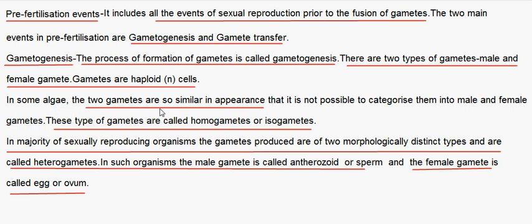In some algae, the two gametes are so similar in appearance that it is not possible to categorize them into male and female gametes. This type of gamete is called homogametes or isogametes. In the majority of sexually reproducing organisms, the gametes produced are of two morphologically distinct types and are called heterogametes. In such organisms, the male gamete is called the antherozoid or sperm, and the female gamete is called the egg or ovum.